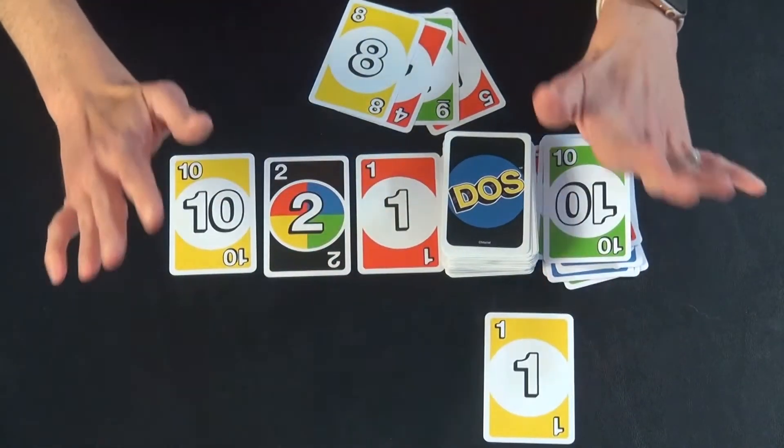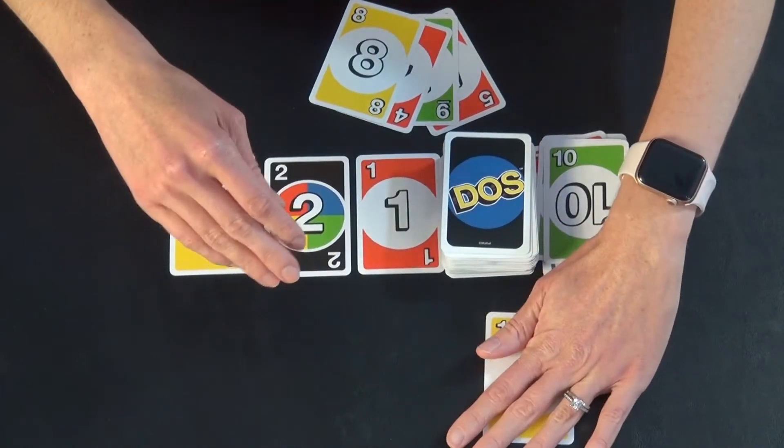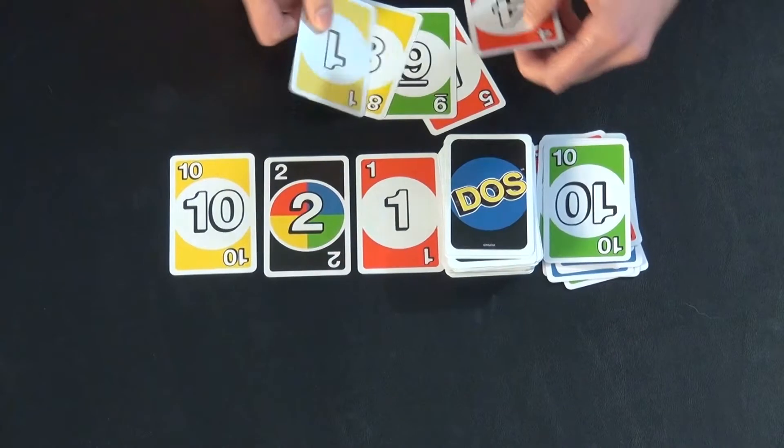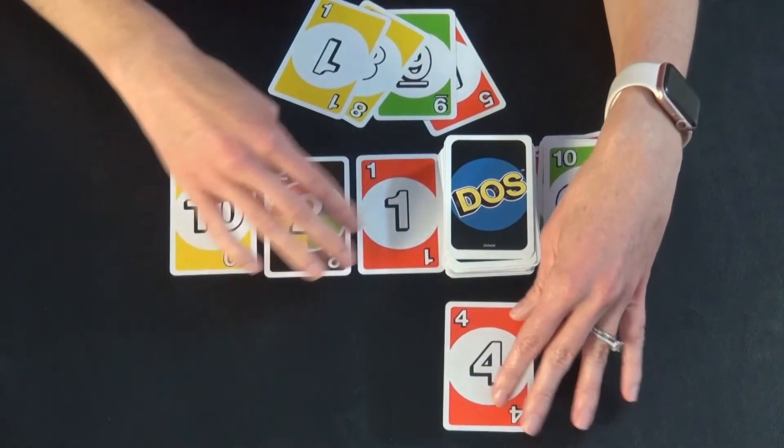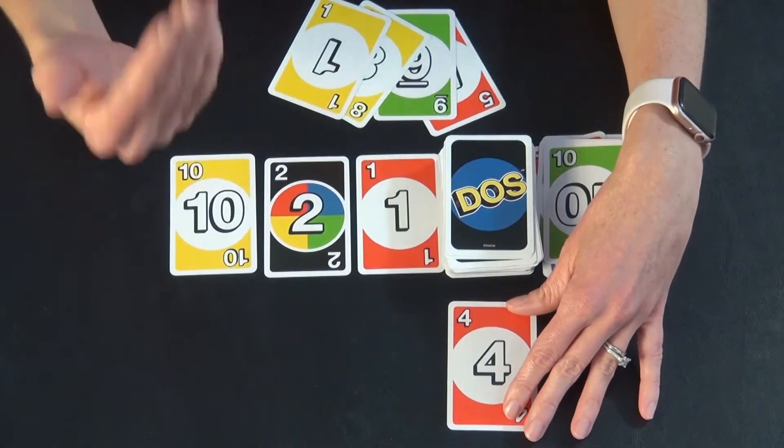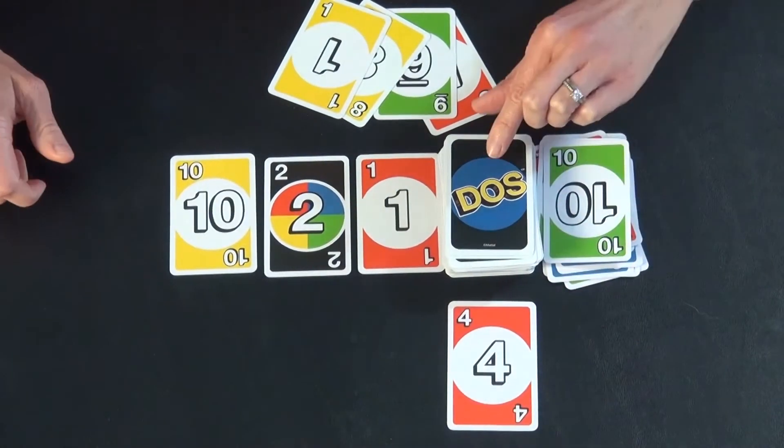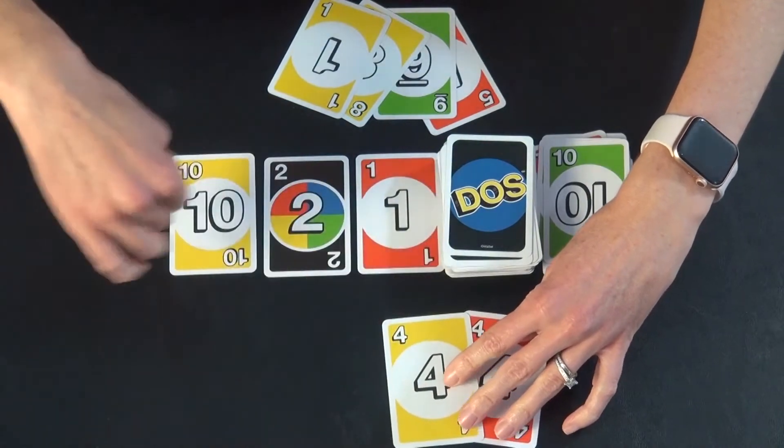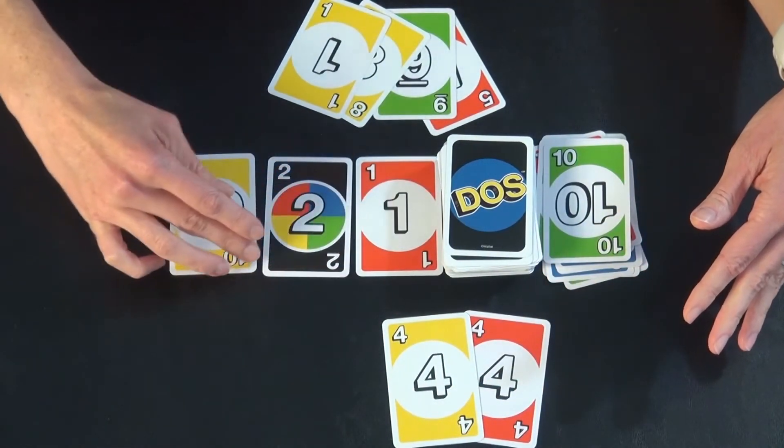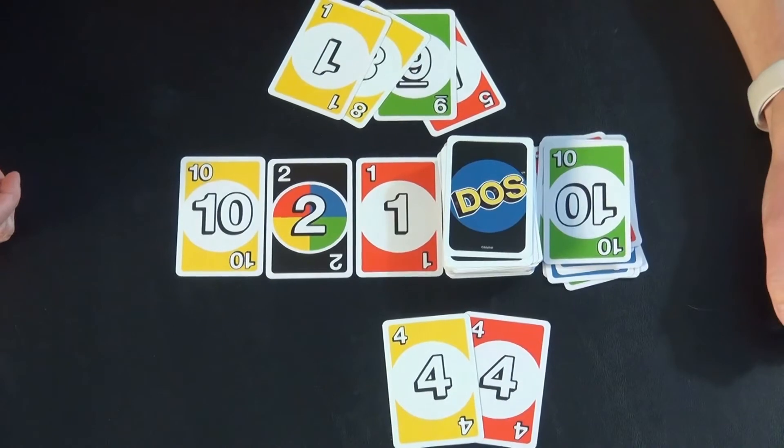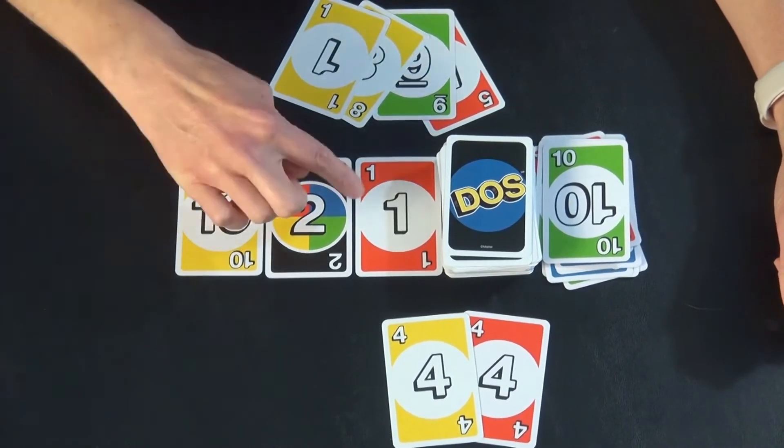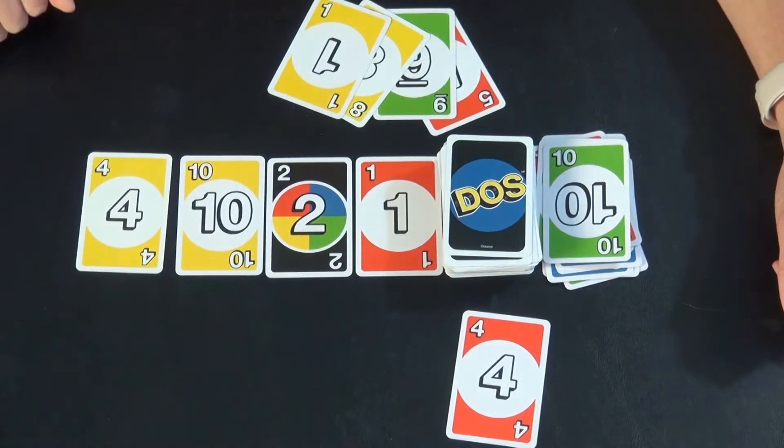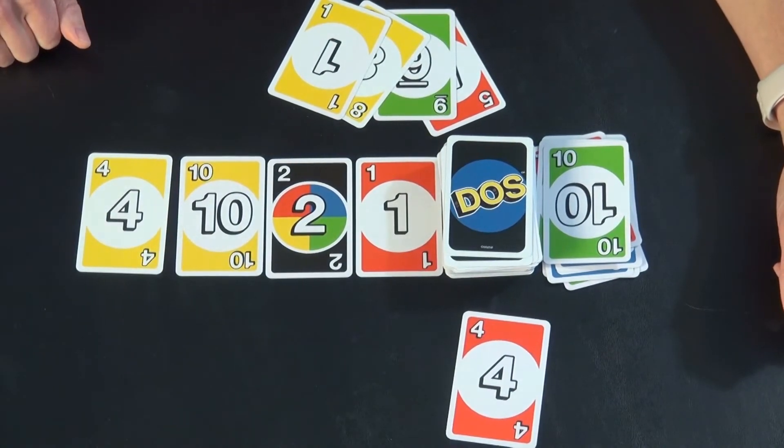This person would win here. But if there was an occasion where they had a different number here, let's say they had this four instead, so they can't play out here. What you do then is you get to draw a card and you can play it immediately if it plays out there. If it does not play on one of those cards, this is a very forgiving game, you can add it to the end and your turn is over.